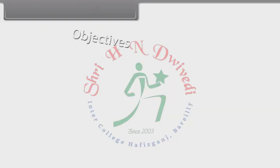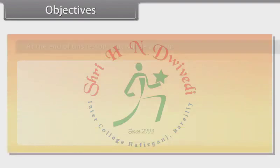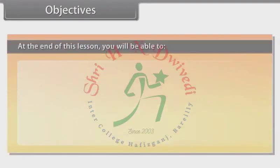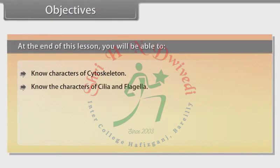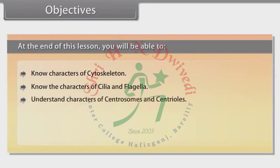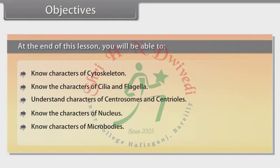Objectives. At the end of this lesson, you will be able to: know the characters of cytoskeleton; know the characters of cilia and flagella; understand characters of centrosomes and centrioles; know the characters of nucleus; and know characters of microbodies.